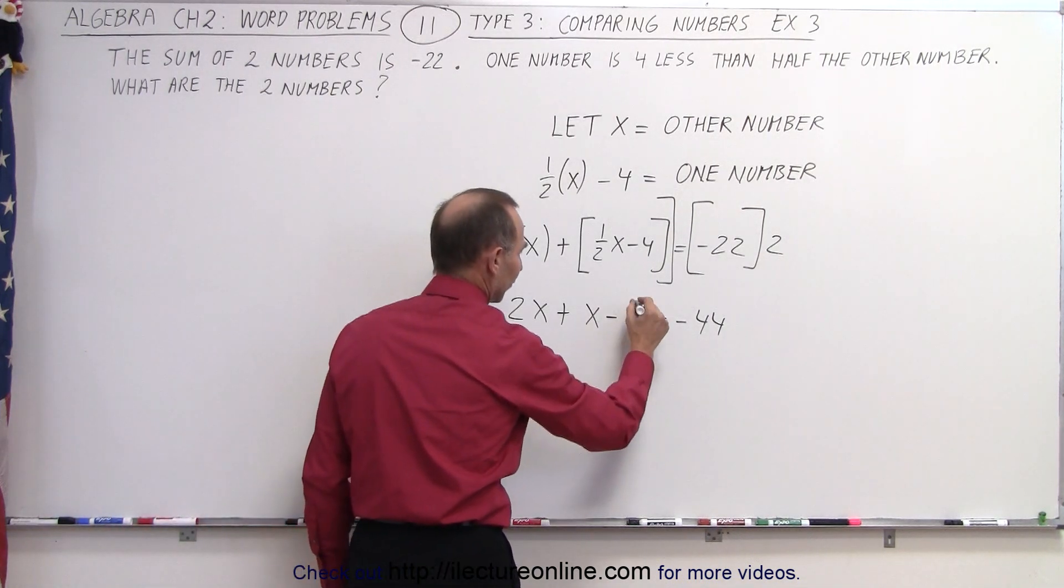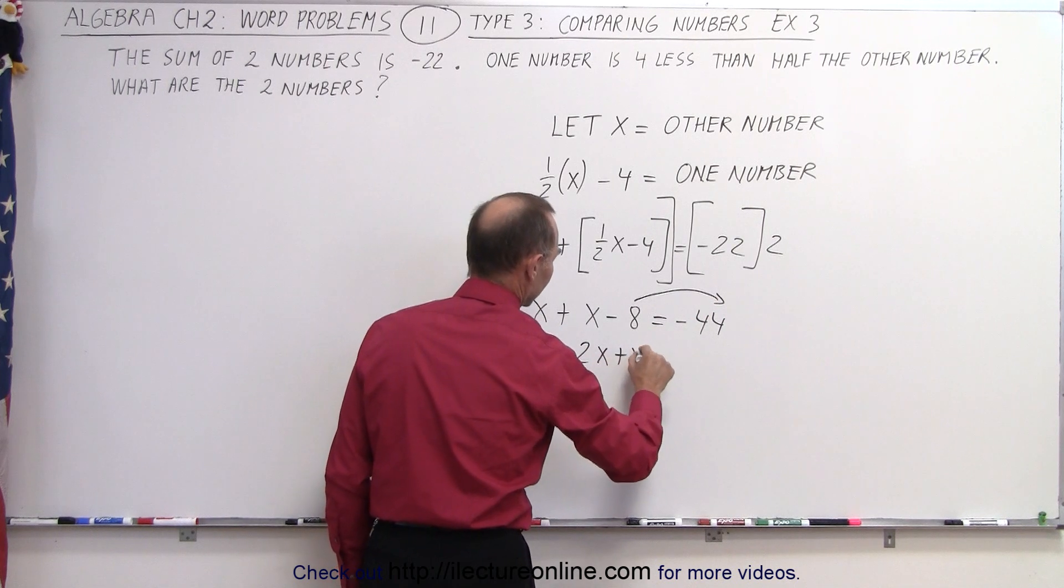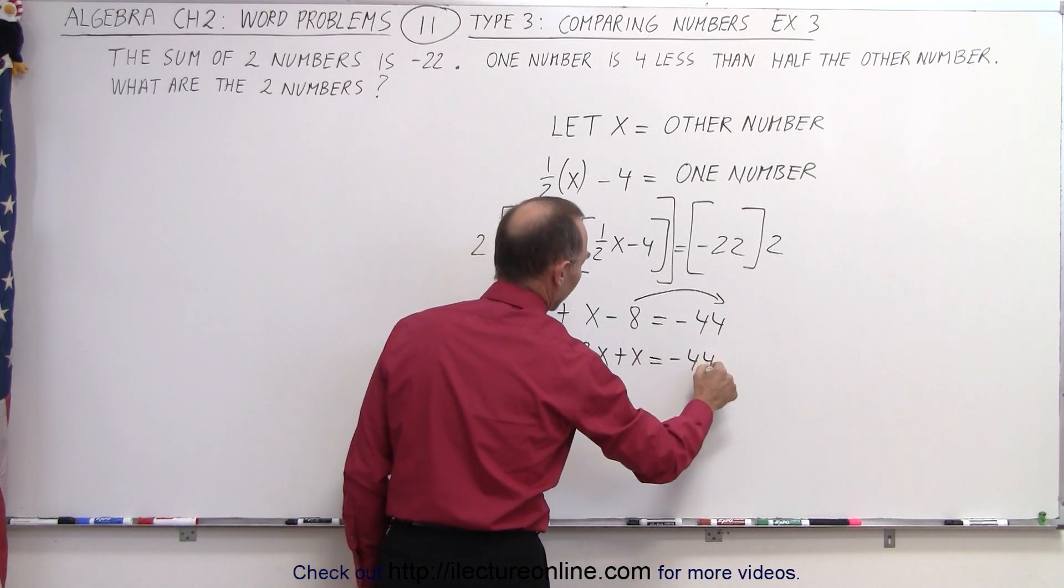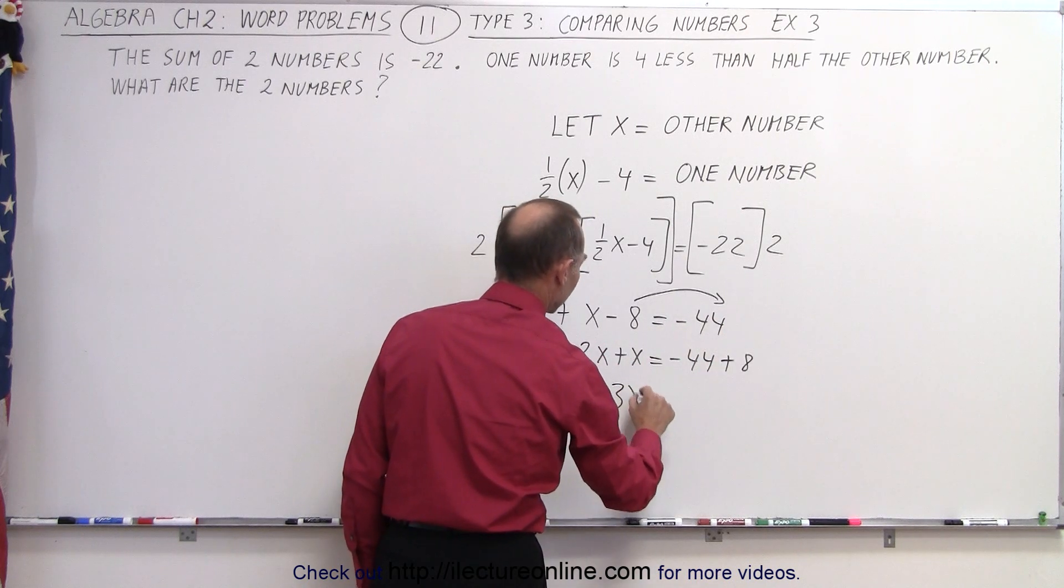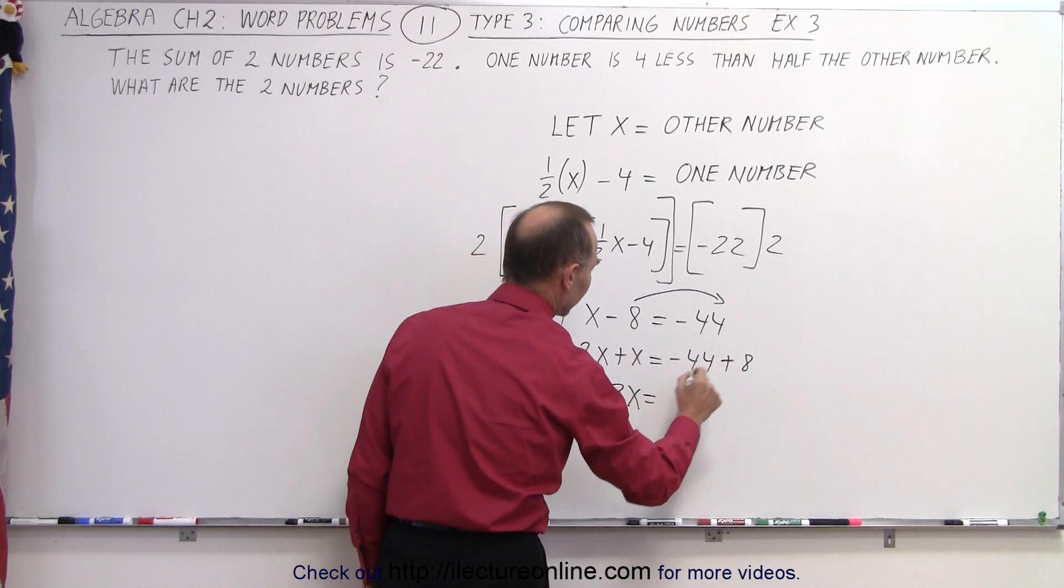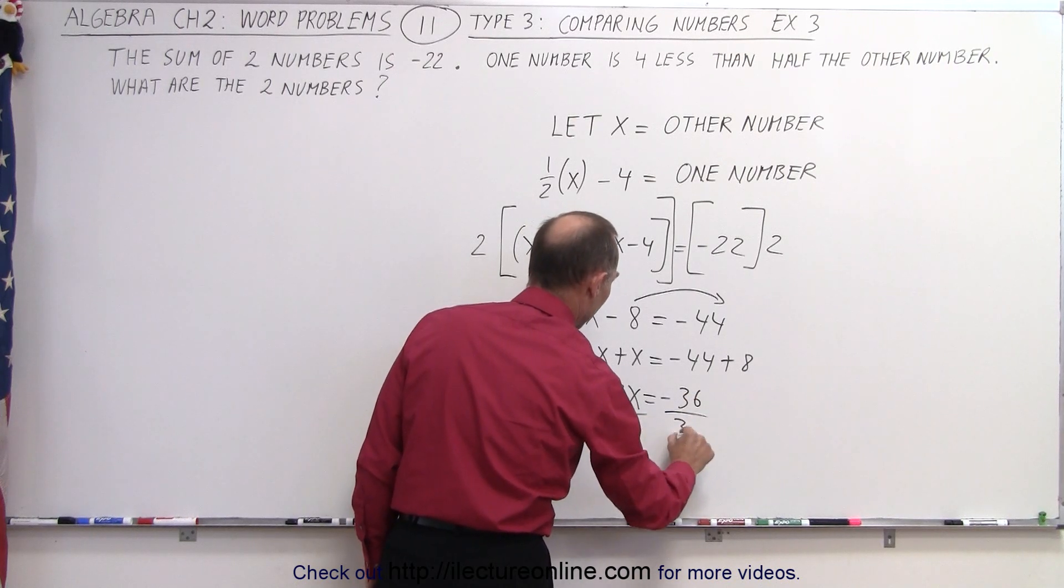Now we combine all like terms. Well, first what we want to do is get the 8 to the other side. So we have 2x plus x is equal to minus 44 plus 8, because the minus 8 becomes plus 8. So 3x is equal to minus 44 plus 8, which is minus 36. Divide both sides by 3, and we get x is equal to minus 12.